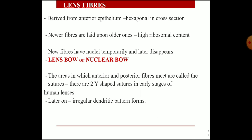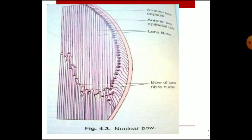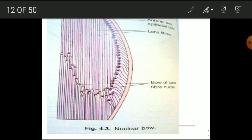The lens bow or nuclear bow: the areas where anterior and posterior fibers meet are called sutures. There are two Y-shaped sutures in the early stages of the human lens; later, an irregular dendritic pattern forms. In the diagram, you can see the anterior capsule, anterior epithelial cells, lens fibers, the bow of the lens showing the arrangement of nuclei, and the inner Y-shaped sutures forming the nuclear bow.